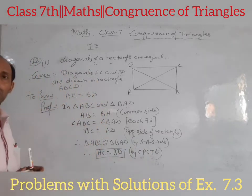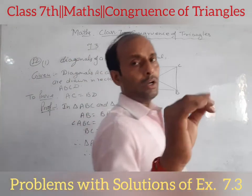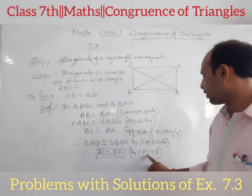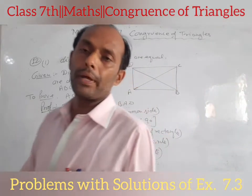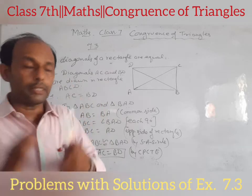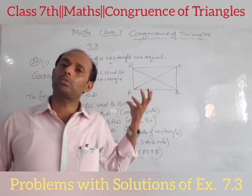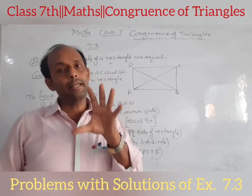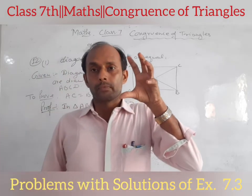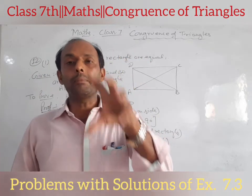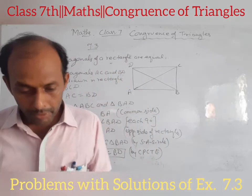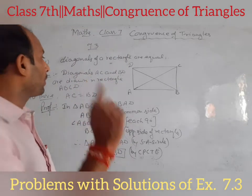Once the triangles are congruent, by CPCTC — corresponding parts of congruent triangles are equal — we get AC equal to BD. This is the method. You have to be aware and focus on your study, then you can clear your concepts about geometry. Without concept clarity you cannot do anything in geometry. So focus on the videos carefully. The second part of question 12: diagonals of a square are equal.